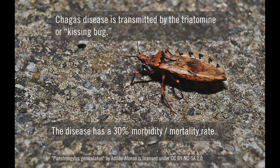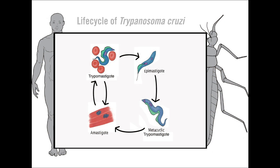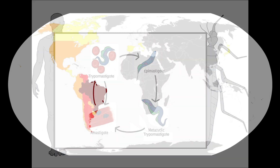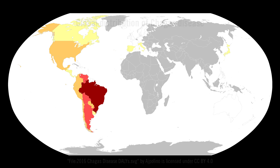Chagas disease is the highest-impact parasitic disease in the Americas, primarily affecting around 10 million people in Central and South America. It's also endemic to the United States where it infects an estimated 300,000 people. It's a disease of poverty — people tend to get infected young and progressively develop disease over their early adult life, during their peak productive period of life.